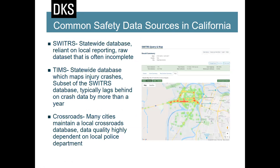Common safety data sources in California include SWITRS (statewide), TIMS (which you're familiar with), and Crossroads — a local database used by many cities. Data quality is highly dependent on the local police department. If there's good collaboration between the police department and public works, you'll have good geocoded data. If not, you have to rely on statewide data that may be incomplete. More complete data means a more improved analysis.